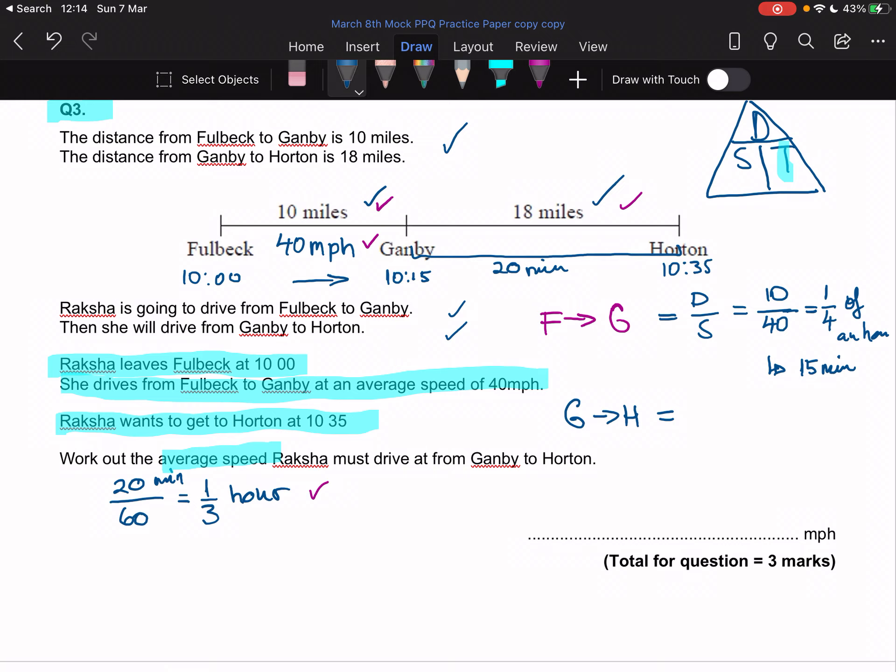To work out speed, I'm going to do distance over time. The distance is 18 miles and the time is one third of an hour. So 18 divided by 1 over 3. Calculating, I get 54 miles per hour. That is my final answer.